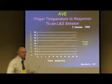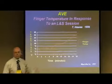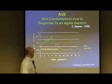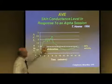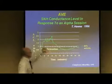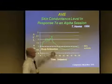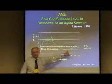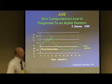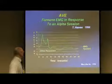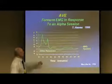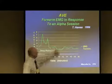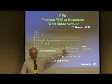Here is skin conductance — again, at about the six-minute mark it really relaxes, and skin conductance goes way down. This is a forearm EMG, and at about the six-minute mark the muscles really relax in the forearm.